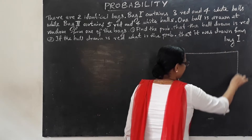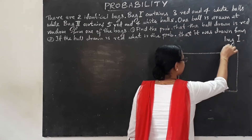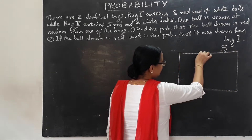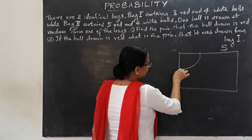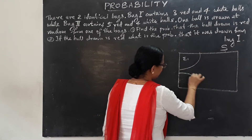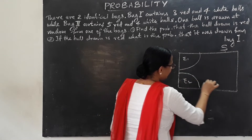I am going to put a sample space S with some partitions E1, E2, E3 split across it.